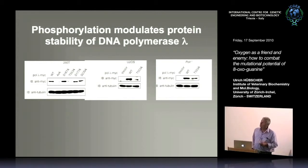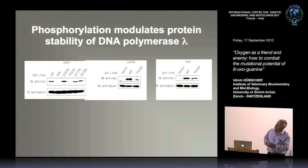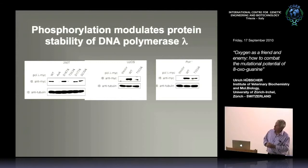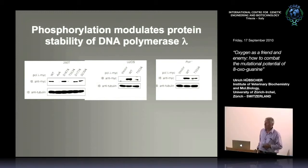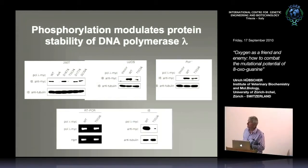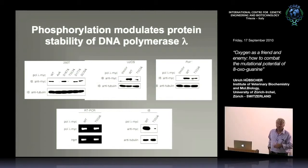Ursula identified the key phosphorylation site as threonine 553. When mutated to a non-phosphorylatable residue, pol lambda protein levels are very low in 293T cells and osteosarcoma cells. We can manipulate pol lambda-minus cells by adding wild-type versus mutated vectors, and the mRNA is detected by RT-PCR but the protein is low.